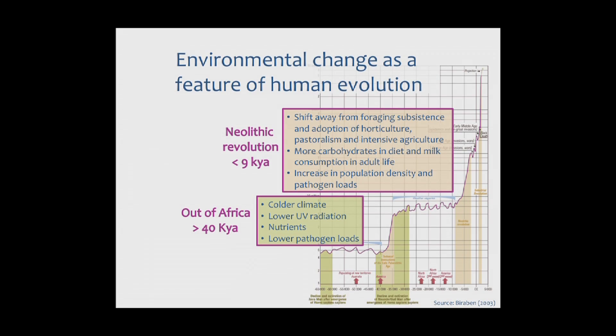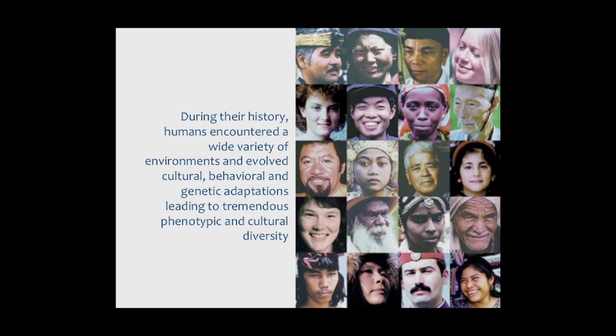These changes induced a number of other changes, for example at the level of diet, which became much richer in carbohydrates, and milk became a major staple of adult diet. There were also massive increases in population densities, which led to an increase in pathogen loads and transmission rates of infectious diseases. So environmental change has been a major defining feature of human evolution, with humans responding through cultural, behavioral, and genetic adaptations, leading to the wonderful diversity of phenotypes and cultures we see today.